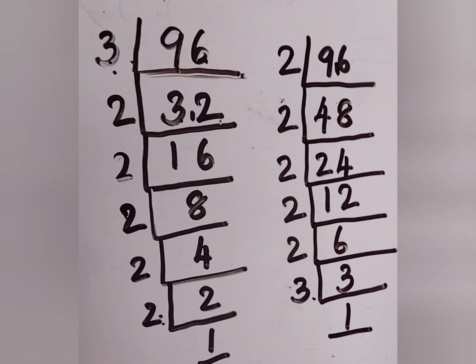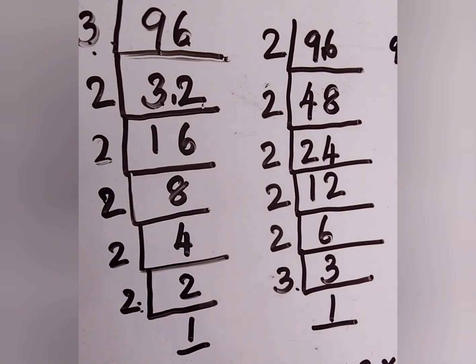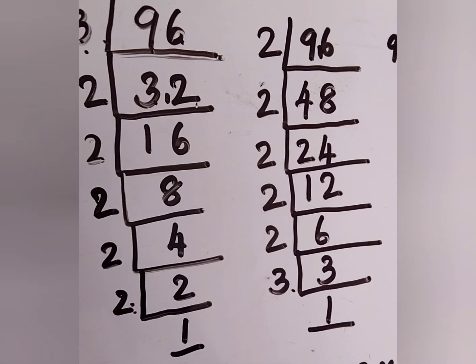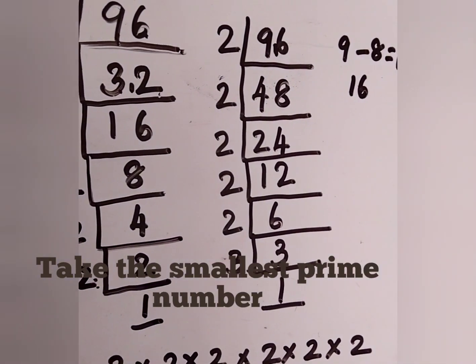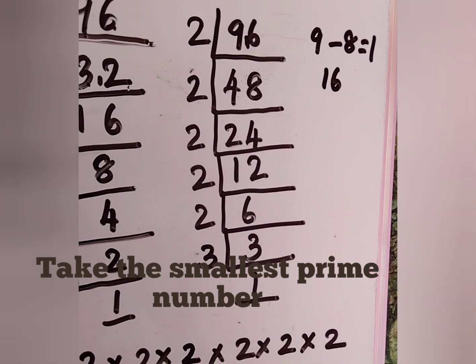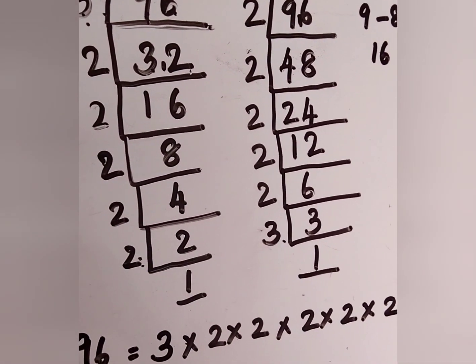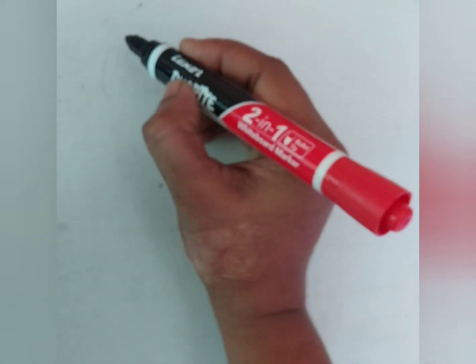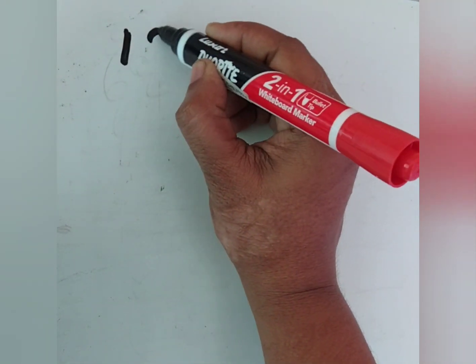In some places, you might have thought: why didn't I divide using 4 or any other number? Because we use only prime numbers for dividing. Now, let us take the next question.